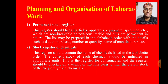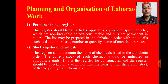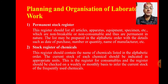The first is the permanent stock register. This register should list all articles — apparatus, equipment, specimens, etc. — which are non-breakable or non-consumable and thus permanent in nature. Items such as tripod stands, test tube stands, burners, and spirit lamps are listed here.